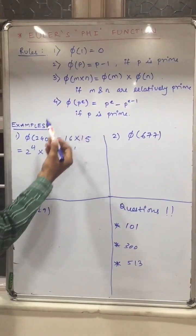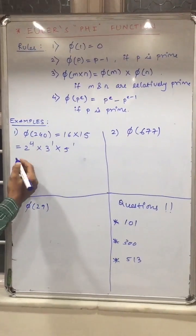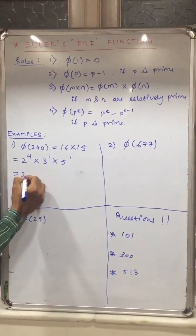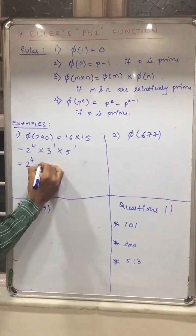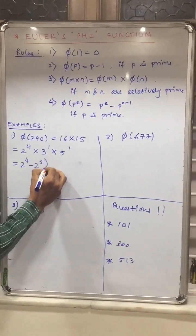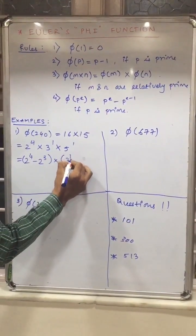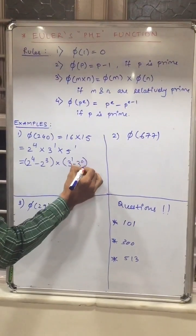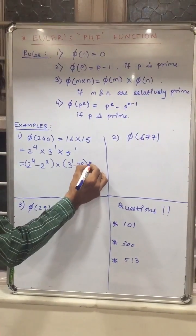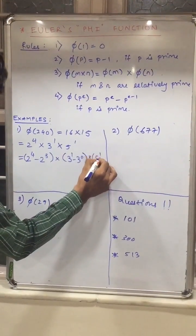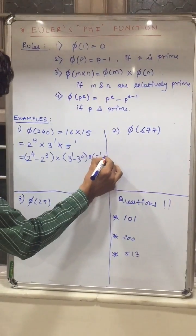So you can see here rule 4 will be applied. So just solve one by one. It will be 2 raised to 4 minus 2 raised to 3 into 3 raised to 1 minus 3 raised to 0 into 5 raised to 1 minus 5 raised to 0.